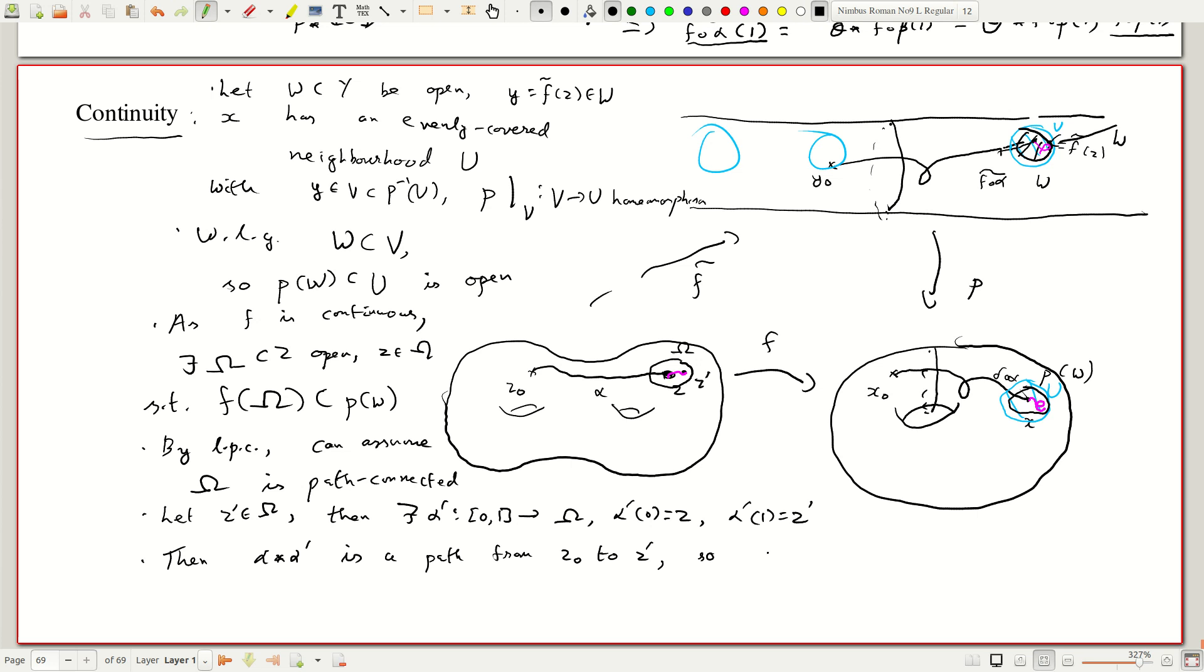So f tilde of z prime, because of well defined I can take any path, this is alpha star alpha prime with f applied to it, tilde of 1. But now let us figure out what this guy is.